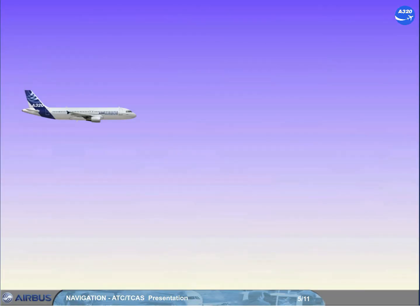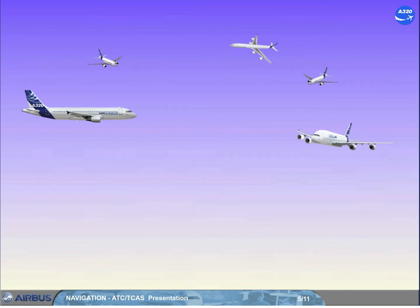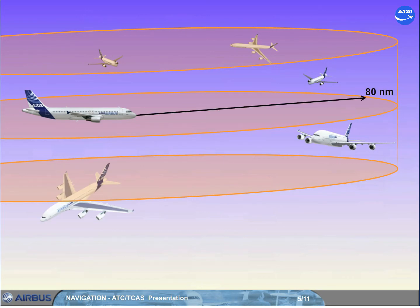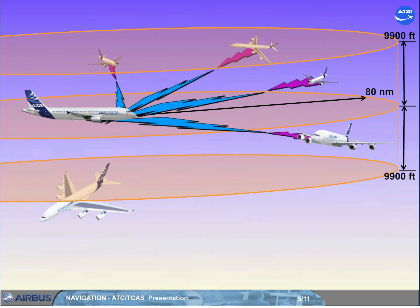On the A320 family, and independently of the ATC system, a Traffic Alert and Collision Avoidance System (TCAS) is installed. It allows detection of any transponder-equipped aircraft flying in the vicinity, within a maximum range of 80 nautical miles and within a maximum altitude range of 9,900 feet, to display potential collision predictions and to issue vertical orders to avoid conflict.